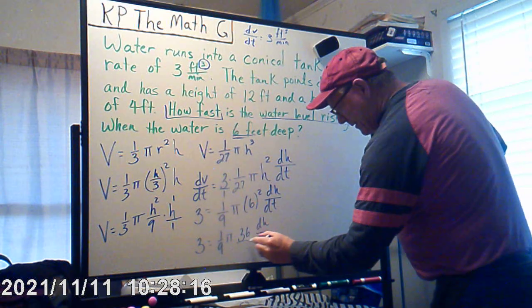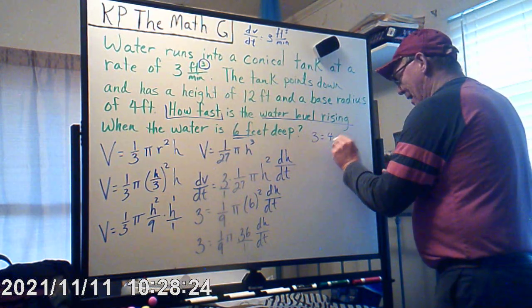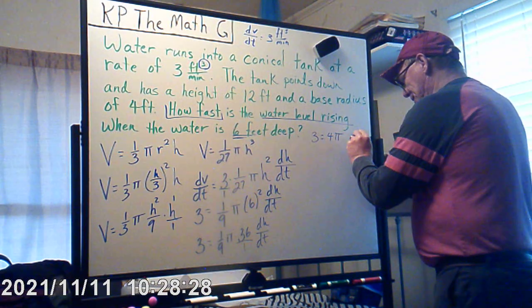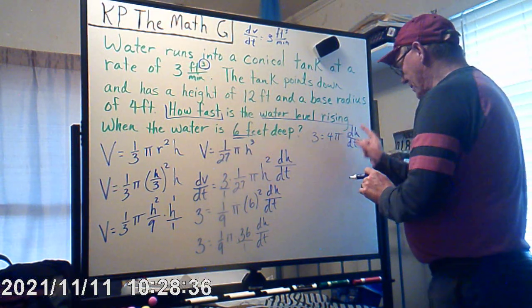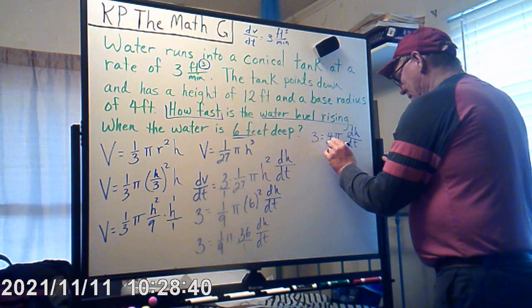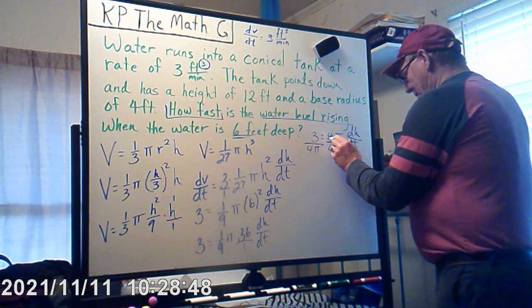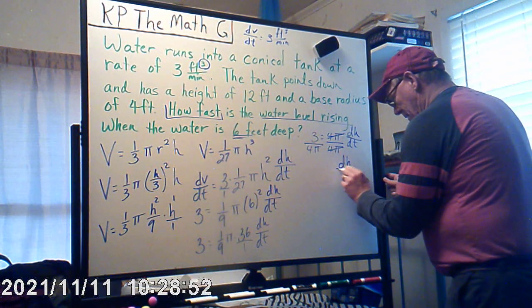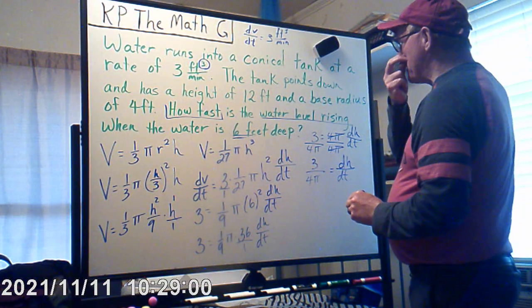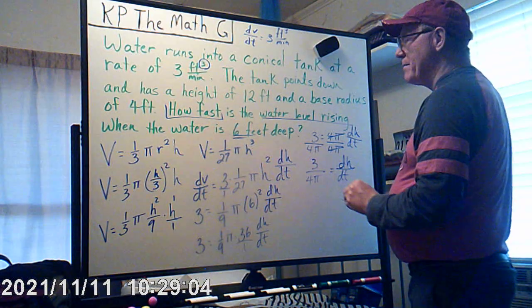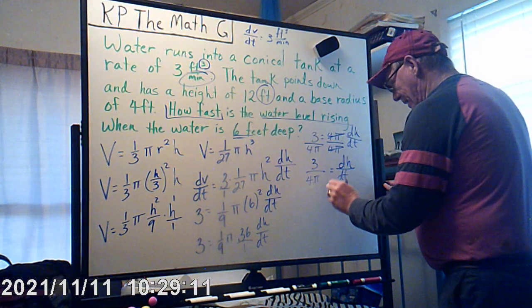Solving for dh/dt: 3 = 4π · dh/dt, so divide both sides by 4π. Therefore dh/dt = 3/(4π). The units are feet per minute.